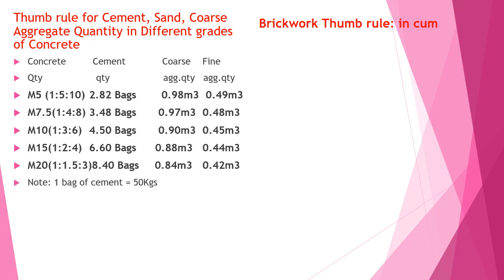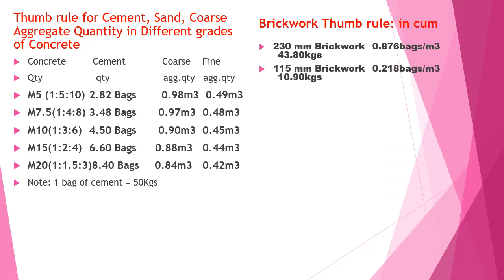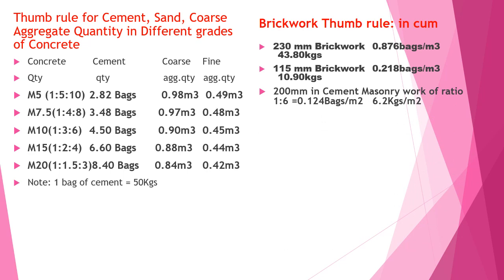Note: one bag of cement consists of 50 kg. Brickwork thumb rules: for 230 mm brickwork, 0.876 bags per cubic meter (43.8 kg) of cement is required. For 115 mm brickwork, 0.218 bags per cubic meter (10.9 kg) is required. For 200 mm cement masonry work at ratio 1:6, 0.206 bags per m² (6.2 kg per m²) is required. For 150 mm cement masonry work at ratio 1:6, 0.0938 bags per m² (4.65 kg per m²) is required.